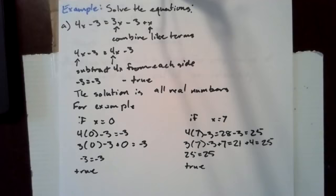For example, if x equals 0, we have 4 times 0 minus 3 equals negative 3, and 3 times 0 minus 3 plus 0 equals negative 3. We have negative 3 equals negative 3, which is true. If x equals 7, we have 4 times 7 minus 3 equals 28 minus 3, which is 25. And 3 times 7 minus 3 plus 7 is 21 plus 4, which is 25. 25 equals 25. So this is true.